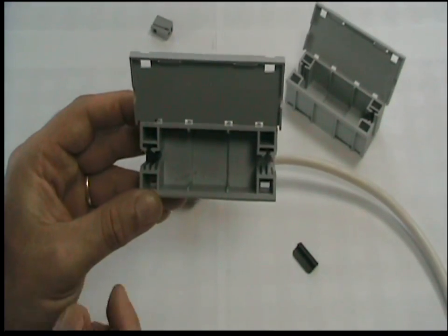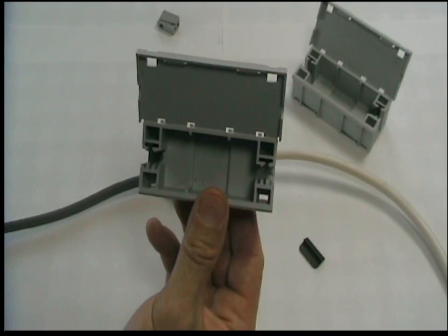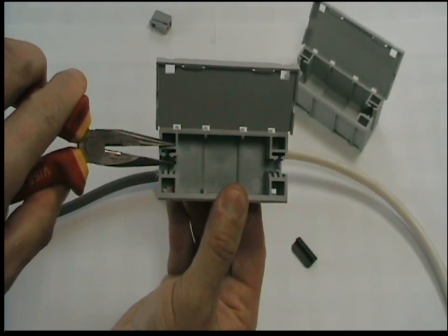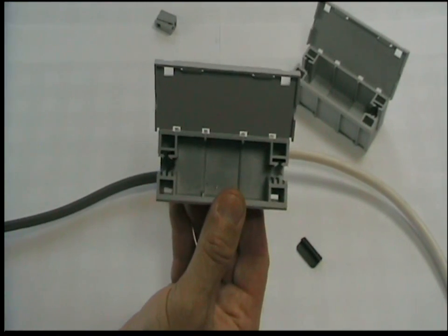For cables that are approximately 5mm in diameter the top of the gripper can be adjusted by squeezing with a pair of narrow nosed pliers. This will make inserting the cable into the gripper easier.